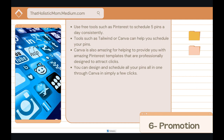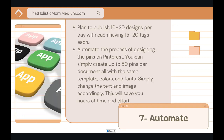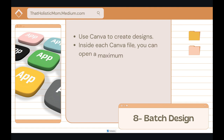Step seven is automating the process. This helps you get organized, plan, and create as many appealing designs as possible. Plan to publish 10 to 20 designs per day, with each design having about 15 to 20 tags. Automate the process by designing pins on Pinterest — create up to 50 pins per document with the same template, colors, and fonts, then simply change the text and image accordingly, schedule the pins, and save hours of time. Create an Instagram from these pins by saving the document and resizing for Instagram and Facebook, creating a simple page that revolves around your portfolio.